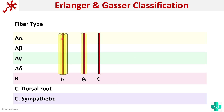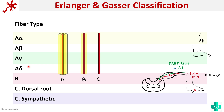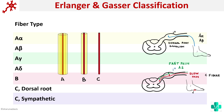Even though the classification is based on diameter, the functions of these nerve fibers are quite different. For example, considering the spinal cord and dorsal root ganglion, pain sensations are carried by the C fibers — slow pain is carried by the unmyelinated C fiber — while fast pain is carried by A-delta fibers. For sensations like touch, A-beta and A-alpha fibers communicate signals to the spinal cord.